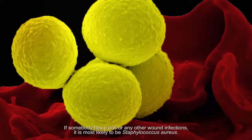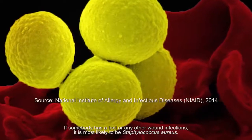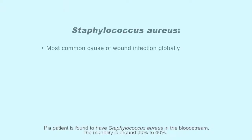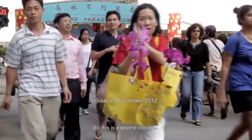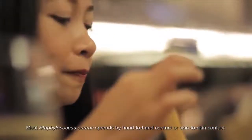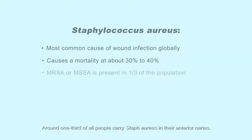Staphylococcus aureus is the commonest cause of wound infections around the world. If somebody has a boil or any other wound infection, it's most likely to be staphylococcus aureus. It can cause endocarditis — an infection of the heart valves — and many other deep-seated infections of bones, joints, and muscles. If a patient is found to have staphylococcus aureus in the bloodstream, the mortality is around 30 to 40%. Most staphylococcus aureus spreads by hand-to-hand contact or skin-to-skin contact.